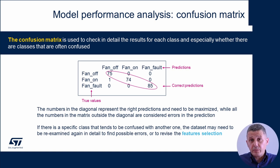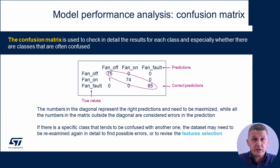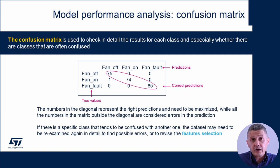Another important step to evaluate the performance of a machine learning model is to look at the confusion matrix. On the horizontal axis we have the predictions given by the model, and on the vertical axis we have the true values from the dataset labels. The correct predictions are on the diagonal, so we can easily see if a specific class is correctly recognized or wrongly confused with another one.